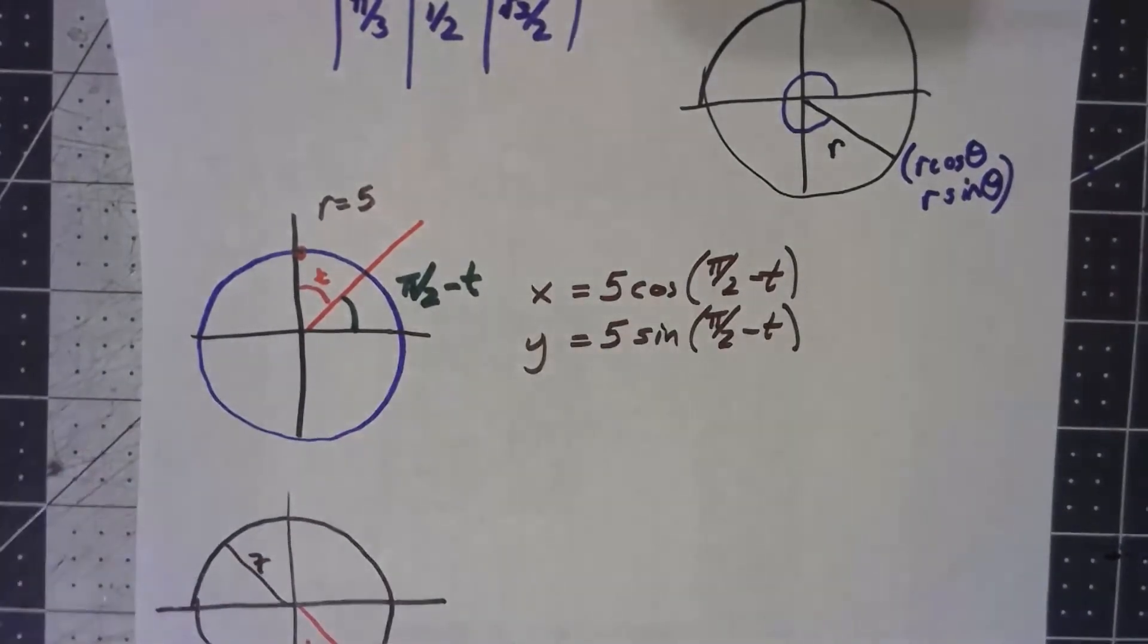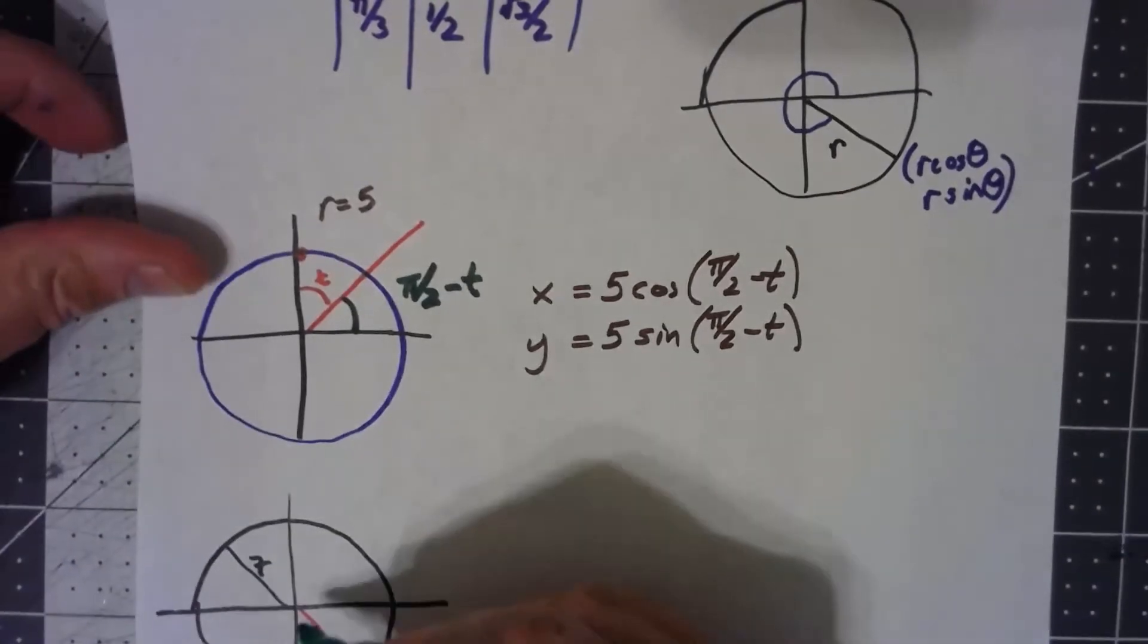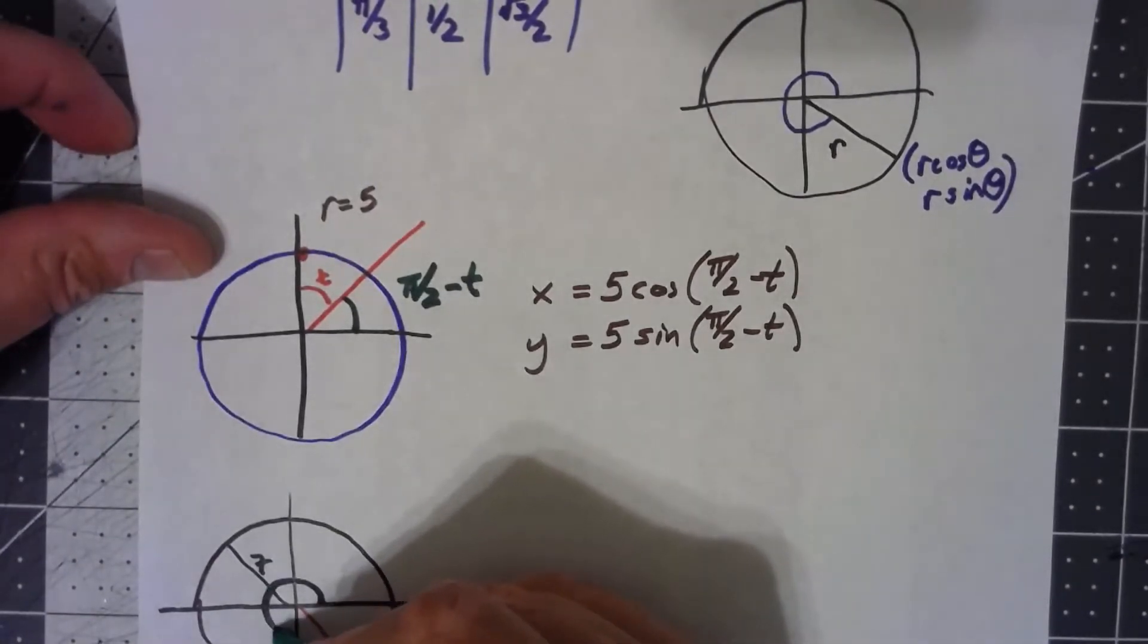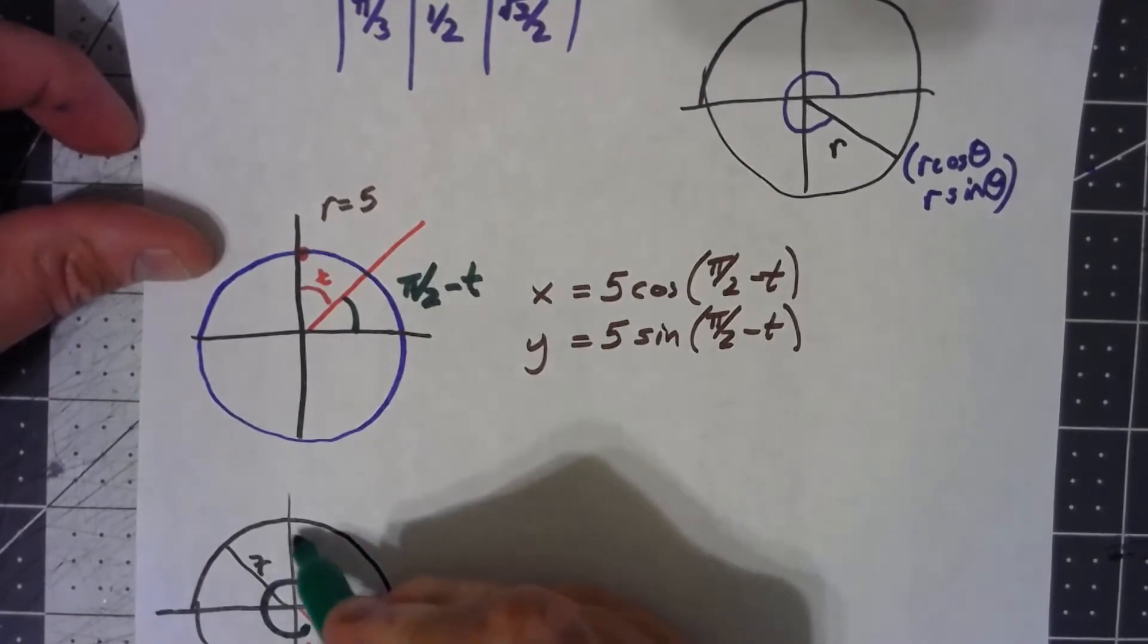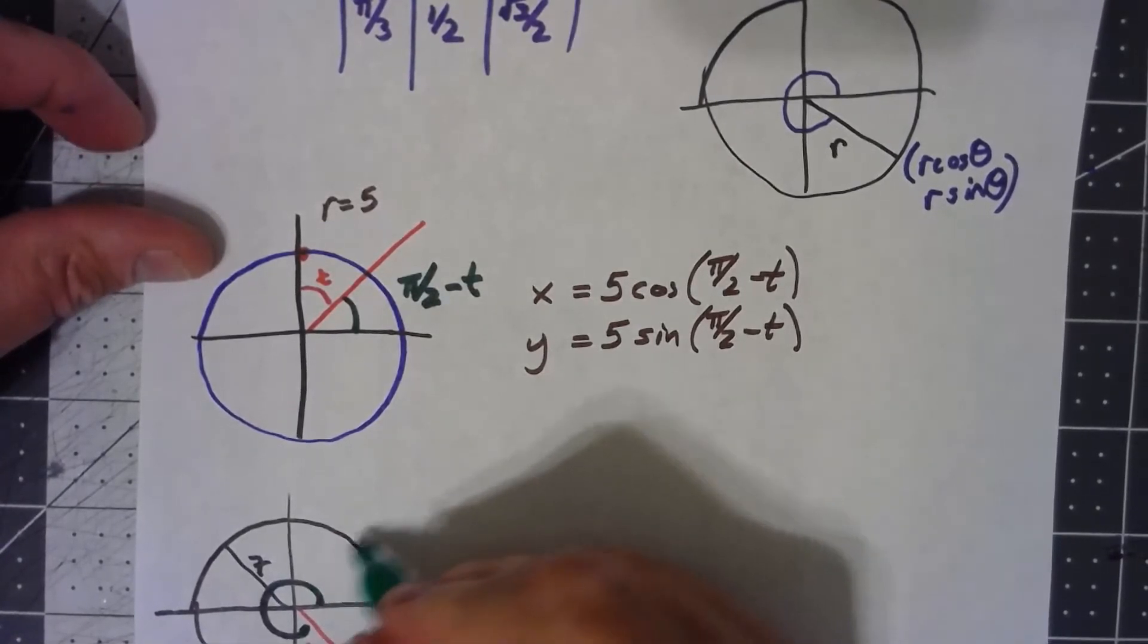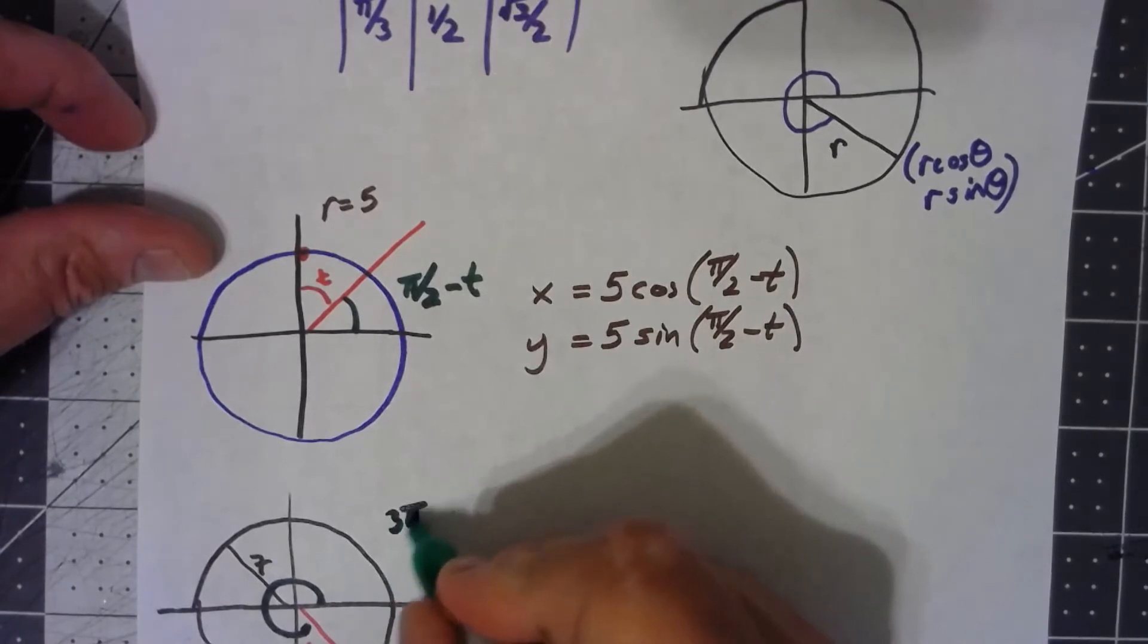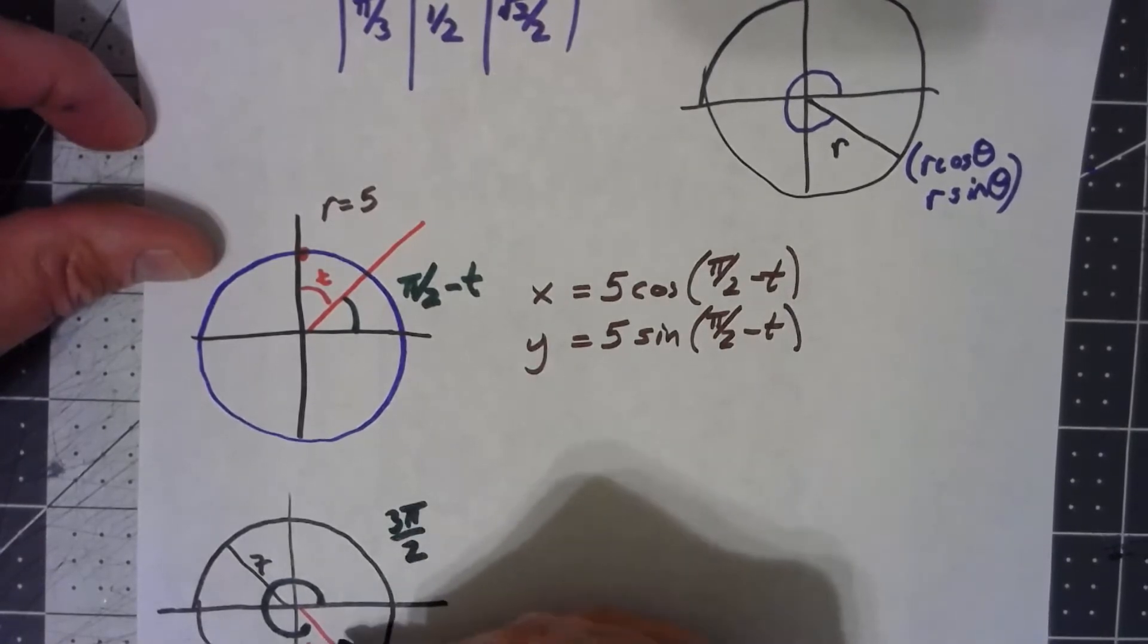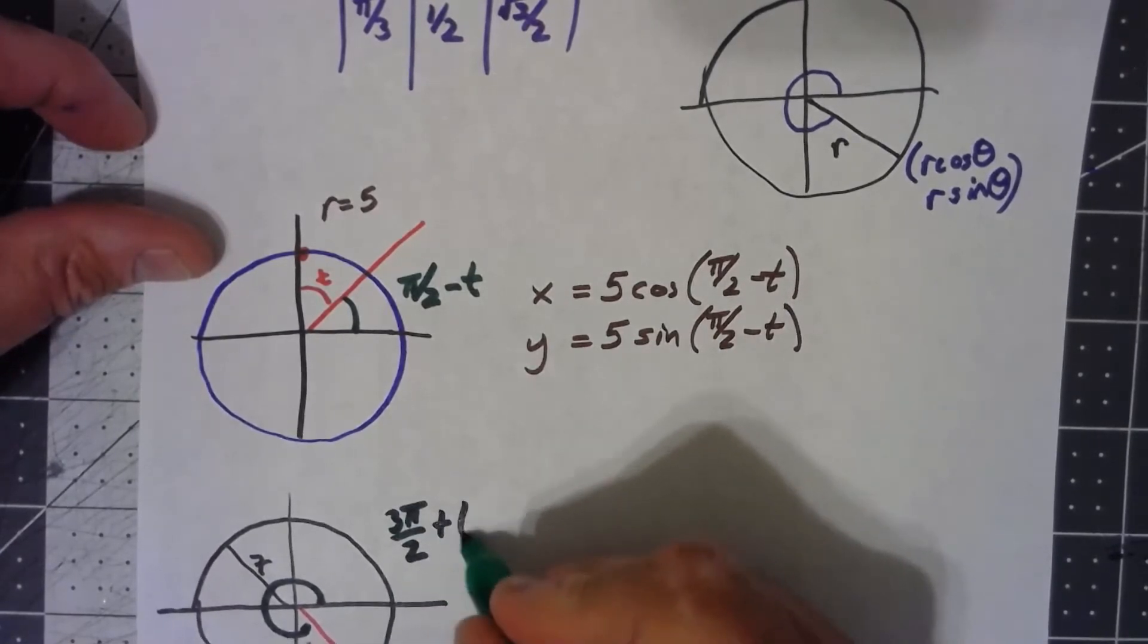Well, I'd have to start here and go all the way around to there. Going to where I started was 3 pi over 2 plus that extra t.